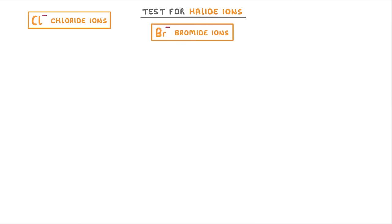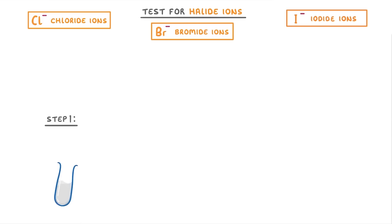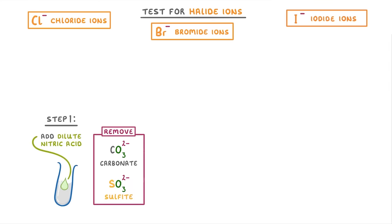The last test we need to look at is the one for halide ions. So chloride ions, bromide ions, and iodide ions. The halide test is pretty similar to the one for sulfates. But for the first step, instead of adding dilute hydrochloric acid, we add dilute nitric acid to get rid of all of those carbonate and sulfite impurities.